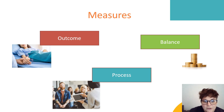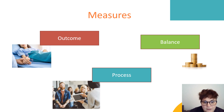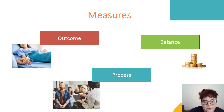A balance measure ensures that anything you're doing within your project to make a change isn't having an unintended impact somewhere else. For example, if your e-learning package costs money, does that balance outweigh other tests of change you could do? It's about making sure there's balance and no negative impact elsewhere. It's always good to have these three types of measures when thinking about an improvement.